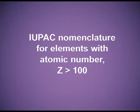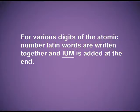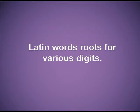IUPAC nomenclature for elements with atomic number 100 and above uses systematic nomenclature directly derived from the atomic number of the element using Latin words for their digits. IUPAC decided to give the name as per the Latin words. For various digits of the atomic number, the Latin word roots are written together and 'ium' is added at the end. For writing the IUPAC name, we need to know the word root for the various digits.